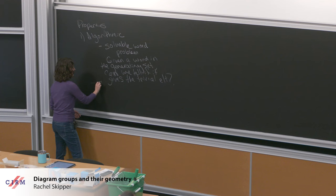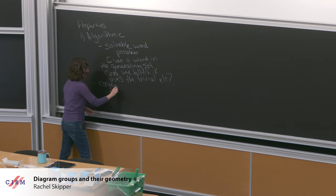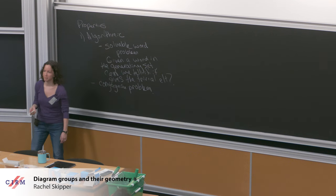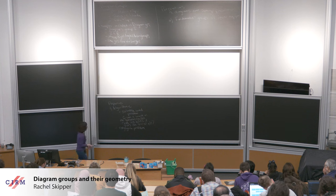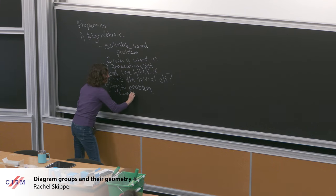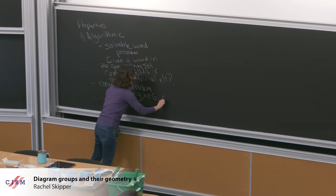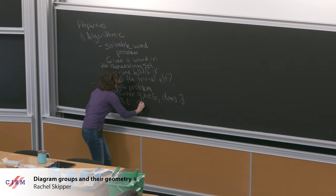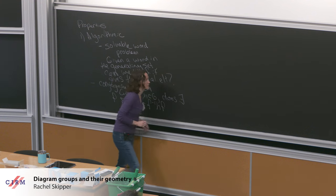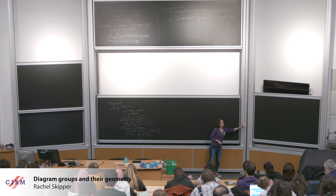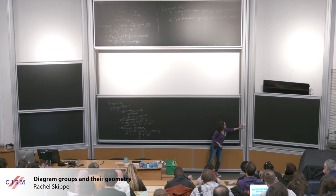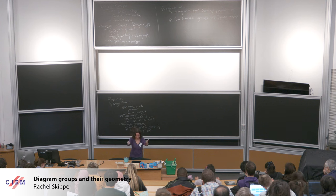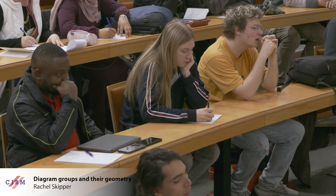These groups also have a solvable conjugacy problem. This is like the word problem, except you want to know whether two elements in the group are conjugate. Given g and h in G, does there exist some other element f such that g equals f-inverse h f? Again, this is something you can answer for diagram groups — if I give you two elements, you can figure out whether or not they are conjugate.